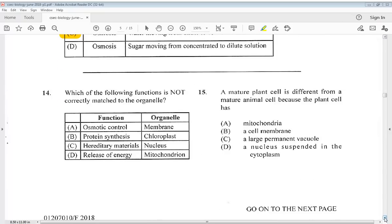Let's go to number 14. Which of the following functions is not correctly matched to the organelle? The answer is B, protein synthesis, chloroplast. 15. A mature plant cell is different from a mature animal cell because the plant cell has mitochondria, a cell membrane, a large permanent vacuole, or a nucleus suspended in the cytoplasm? The answer for question 15 is C.